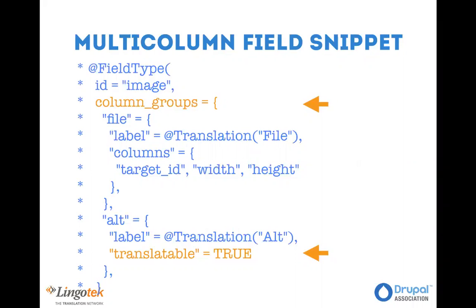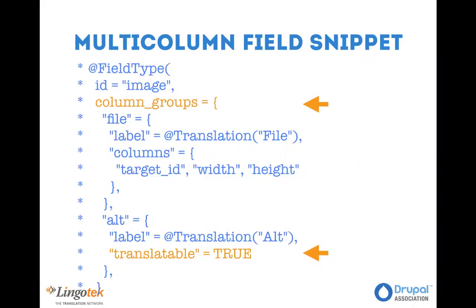If you have a field with multiple columns, you may define column groups. For example, in an image field we have different columns: the target_id identifying the file, the width, the height, the alternative text, and the title. We group target_id, width, and height under a 'file' group, and the alternative text under another group. If we want to make the alternative text translatable by default, we set the 'translatable' key to true on that group. When image fields are enabled for translation in the content translation settings page, the alternative text and title will be enabled by default, while the file itself will not be — though site builders can configure that.